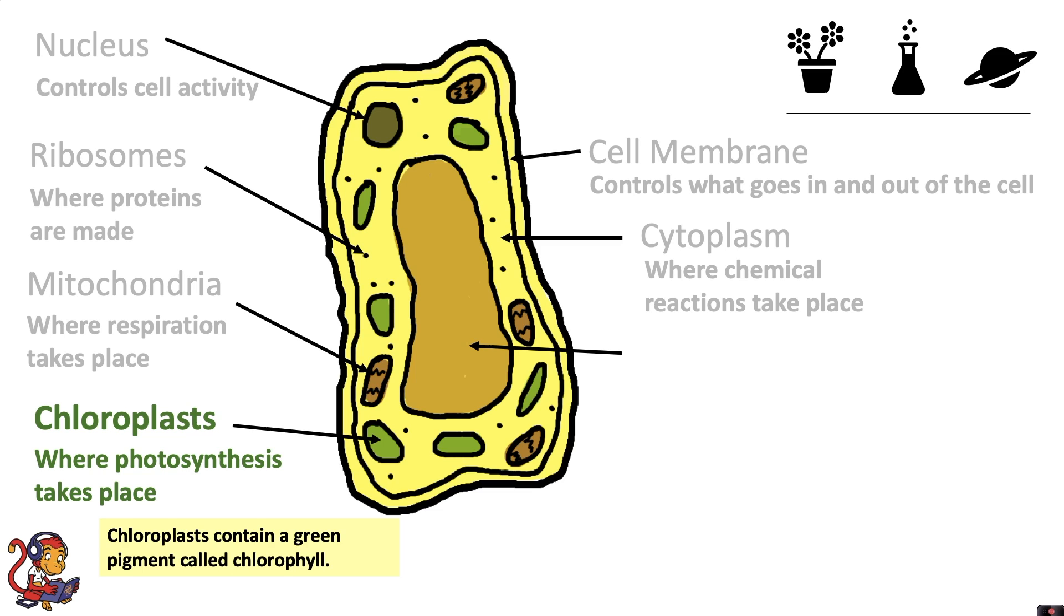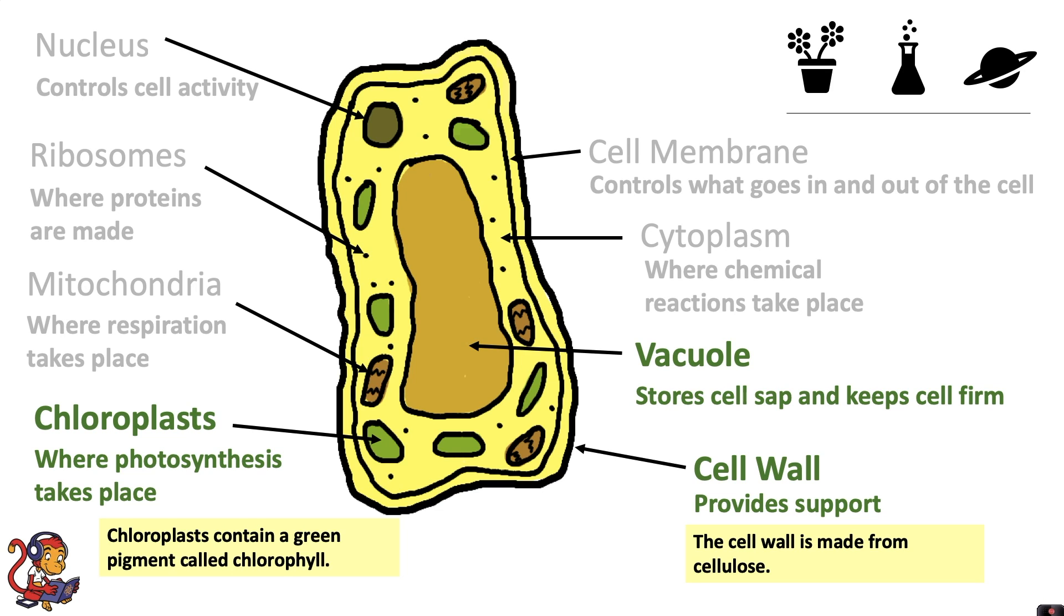In addition, plant cells also have a vacuole which stores cell sap and keeps the cell firm. And finally, it also has a cell wall which provides support. The cell wall is made from cellulose.